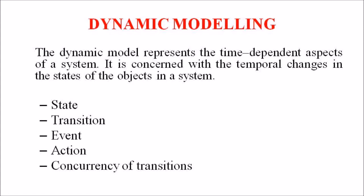The main concepts are: firstly, state, which is the situation at a particular condition during the lifetime of the object. Secondly, transition, a change in the state. Third, event, that is an occurrence that triggers transition. Fourthly, action, that is an uninterrupted and atomic computation that occurs due to some event. And finally, concurrency of transitions.